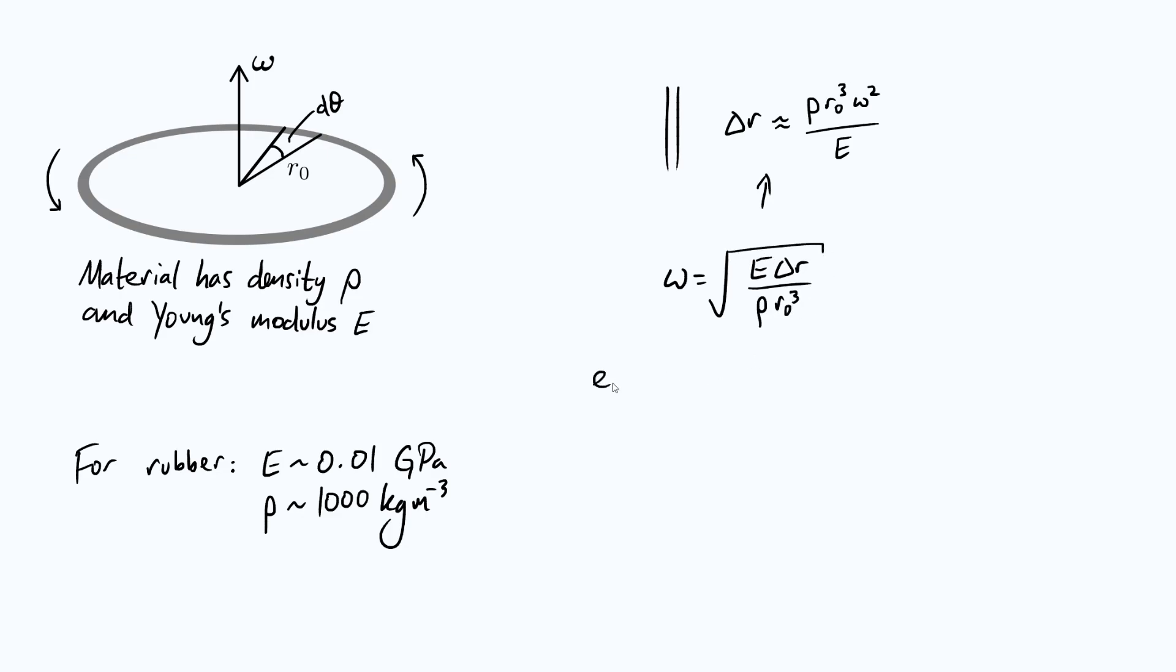And let's say for example we have a ring of radius five centimeters, and let's say we want to observe a 10% expansion, so we want the change in radius to be five millimeters. Then if we put the numbers in, use these typical order of magnitude values for E and rho,